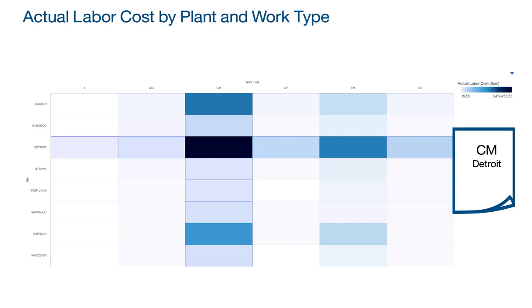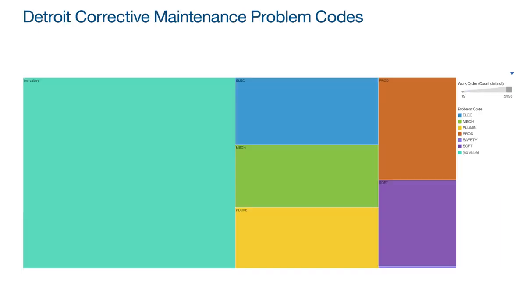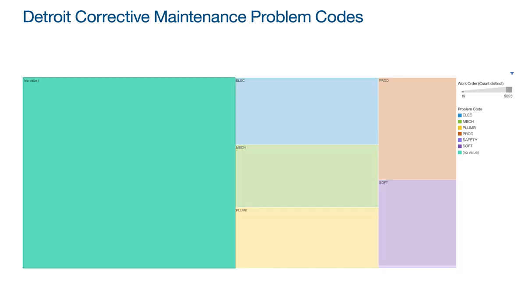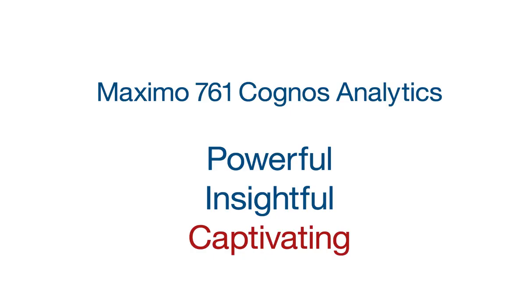When I look at corrective maintenance work, I want to know what's the problem — why are my assets failing? Unfortunately, when I look at my problem codes in Maximo, Detroit is not reporting corrective maintenance problem codes, so I don't know why my issues are occurring.